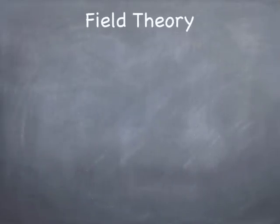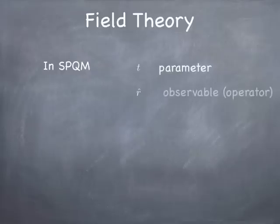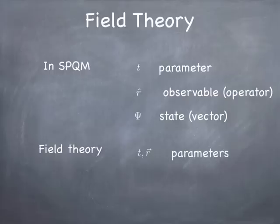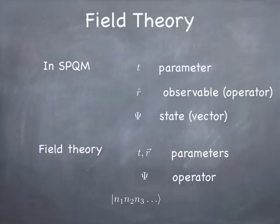Let's talk about the basics of field theory. In regular old quantum mechanics, t is a parameter, r is an operator — it's an observable — and psi is a wave function, the state vector. We're going to switch to field theory, and one of the things that has to happen is r and t have to be put on the same footing. The approach we'll take is to move r to be just a parameter, so r and t are now both parameters, psi is elevated to an operator, and the state becomes a ket that tells you how many particles are in the various single-particle wave function states.